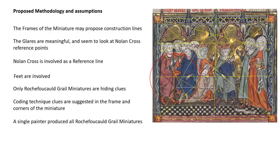Finally, and this is new: it was a single painter who produced all the Rochefoucauld Grail miniatures from page 20 to page 200. I know this because I read the fine print on the Lancelot Grail Project webpage — the work of Professor Alison Stones, who allowed me to use a high-definition picture and sent it by email. She studied the painting styles; she detected three painters total and can identify the areas of the manuscript on which each worked.